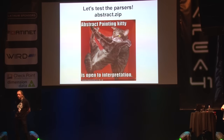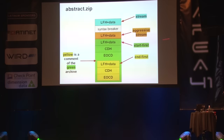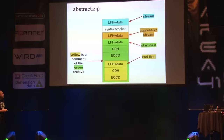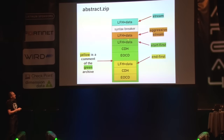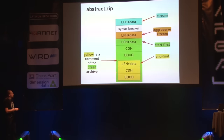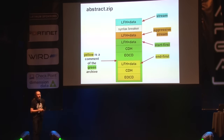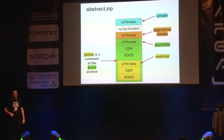I created something called 'abstract ZIP' which merges all these parsing approaches into one file. It can be parsed four different ways: end-first (no comment), start-first (large comment), stream parsing, and aggressive stream parsing. There's also a separate stream embedded in the file not linked to any of the other structures, which end-based parsers will never encounter, plus some syntax breakers with another local file header after them.